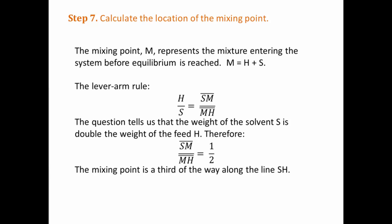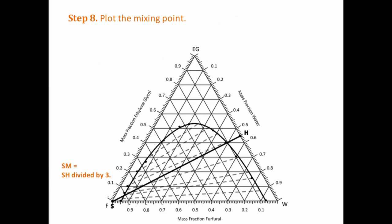Therefore, the mixing point M is a third of the weight along the line SH, which we have already drawn. Measure the distance of the line SH, divide it by 3, and then plot the point M. The mixture of point M is going to separate out along a tie line to form the extract and raffinate phases.